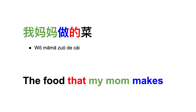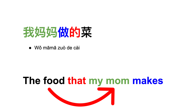For example, 我妈妈做的菜 would be translated as 'the food that my mother makes.' As you can see, the first part of the sentence in English is put at the end in Chinese — so 'food' is the last part, which is 菜.